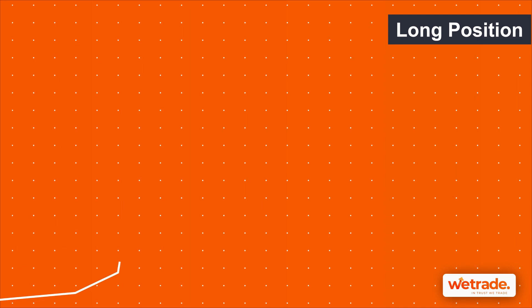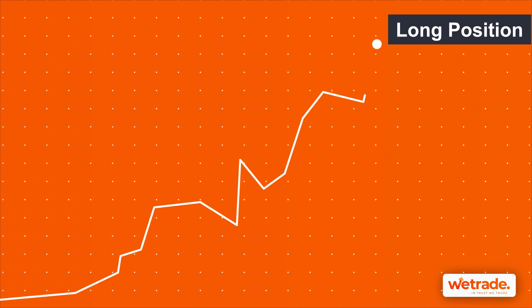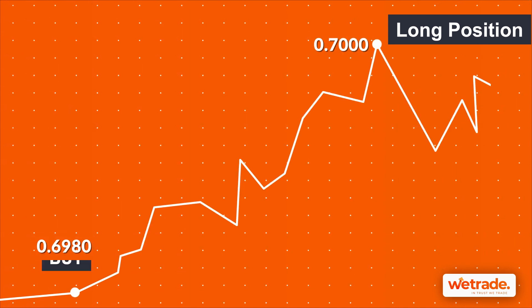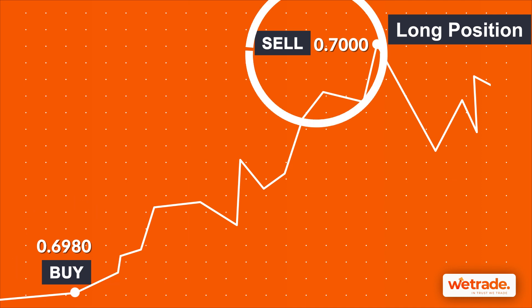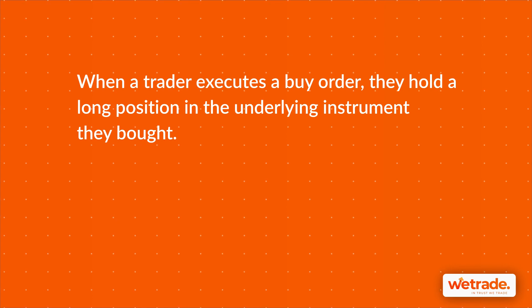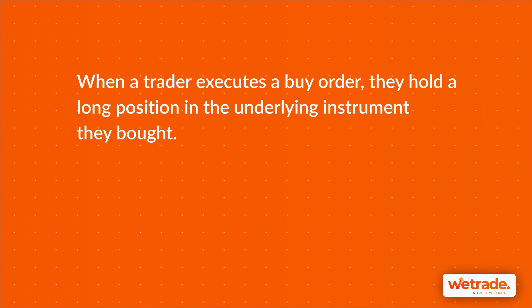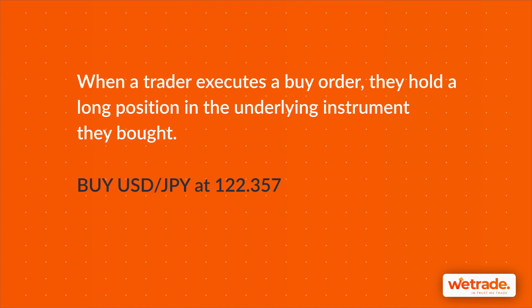In the case of the long position, it's the typical opposite of the short position, in which you buy low and sell high, with traders hoping for a currency to increase in the future. They usually buy at a lower price and sell it back at a higher price. This option is known as going long. For example, when a trader executes a buy order on USDJPY, they hold a long position in the underlying instrument, expecting the US dollar to appreciate against the Japanese yen.